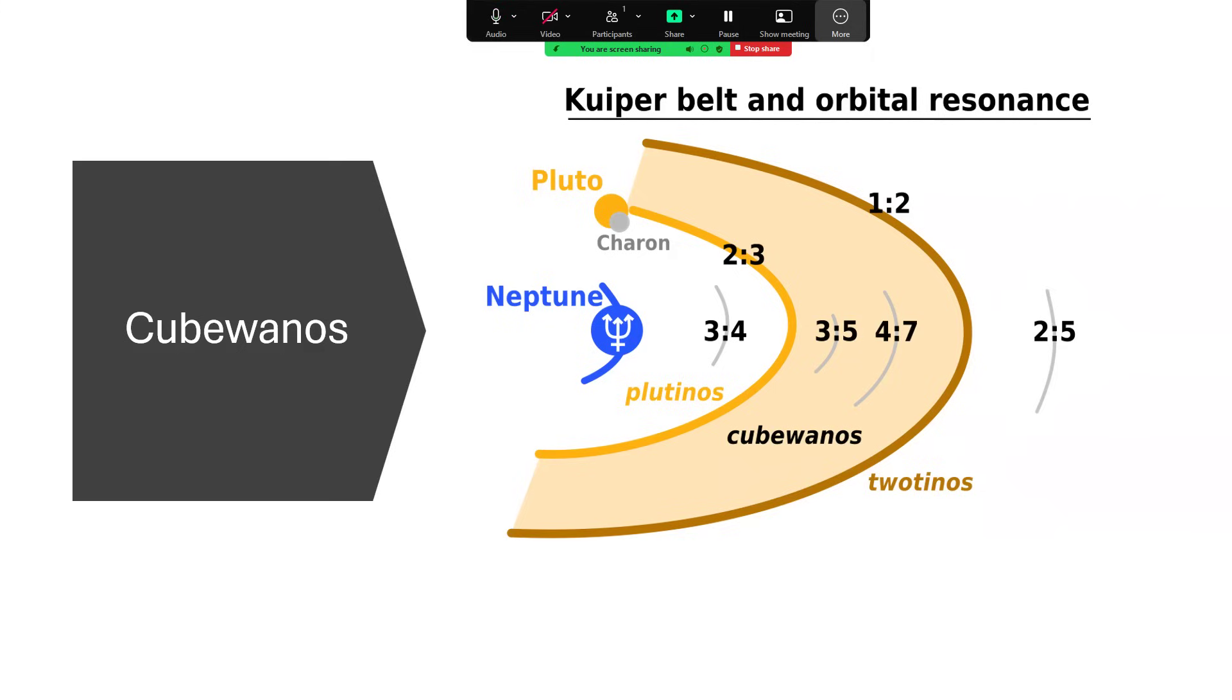So for every three laps that Neptune does, Pluto does two. And QB1 turned out to be in an orbit which was in a three to five ratio. So we now call things that are in the two to three ratio with Neptune plutinos, and after QB1 we call things in three to five ratios QB1-nos.